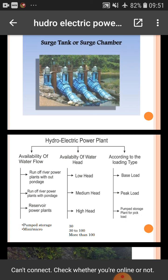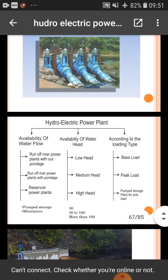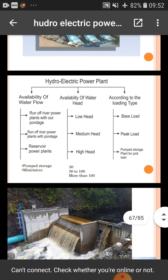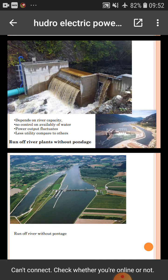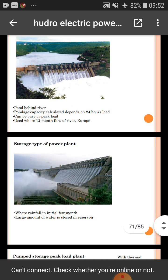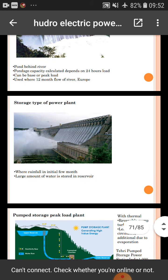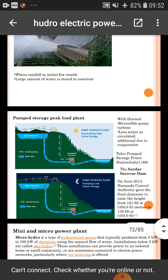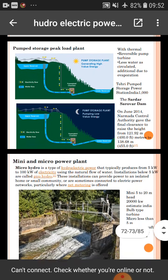Classification of hydroelectric power plants — by availability of water flow: run-of-river plant without pondage, run-of-river plant with pondage, and reservoir-type power plant. By availability of water head: low head, medium head, and high head. By loading type: base load and peak load. In the storage-type power plant, where rainfall is limited to a few months, a large amount of water is stored in the reservoir. There is also the pumped storage peak load plant.